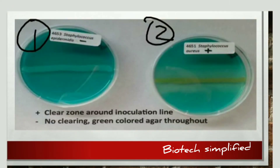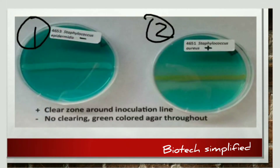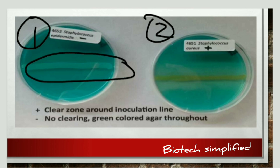In this image there are two petri dishes, both containing the same DNase test medium, but with different organisms. The first petri dish contains Staphylococcus epidermidis. The area around the colony is green, the same color as the medium, indicating that the DNA is not hydrolyzed. So this organism is negative in the DNase test.